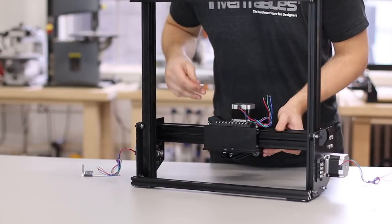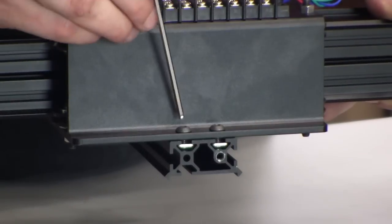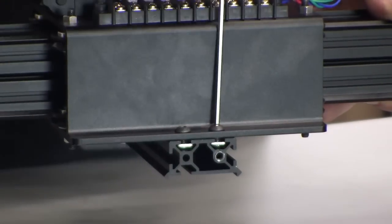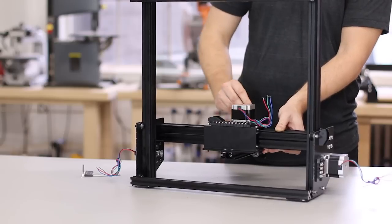Once all four screws that attach the Z-axis maker slide are threaded, get them hand tight and then crank them all down as much as you can.